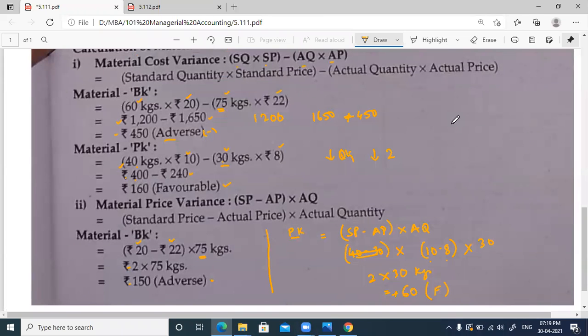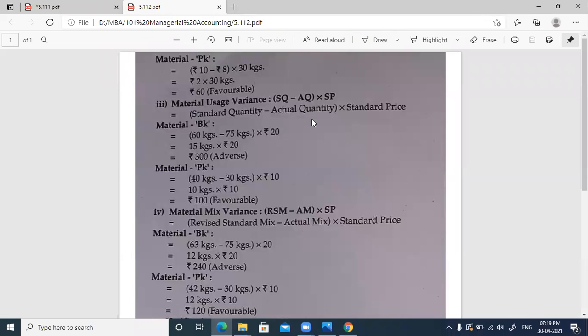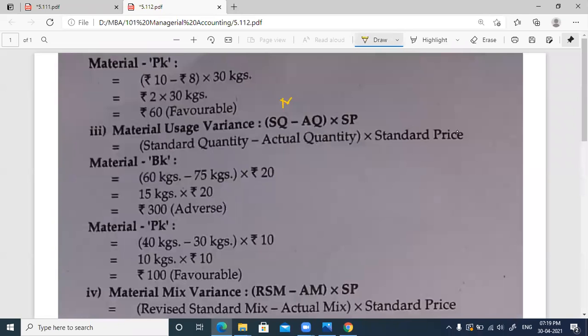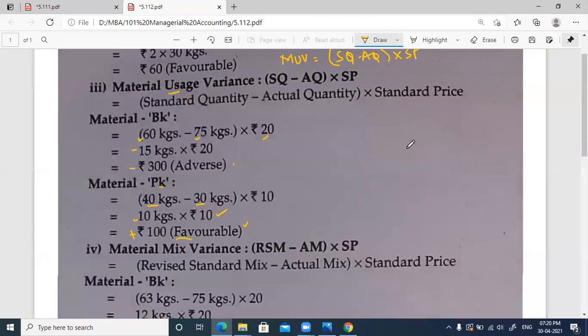Material usage variance formula is standard quantity minus actual quantity into standard price. For BK, it is minus 15 into 20, which is minus 300, adverse. For PK, 100 rupees positive figure, so 100 favorable. This is what we have discussed in last three days.